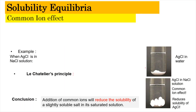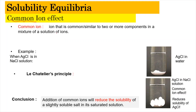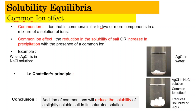So, common ion effect. What basically is a common ion? A common ion is an ion that is common or similar to two or more components in a mixture of solutions. By having the common ion, it will affect the solubility — it can only reduce the solubility of the salt or increase the precipitation when the common ion is present.